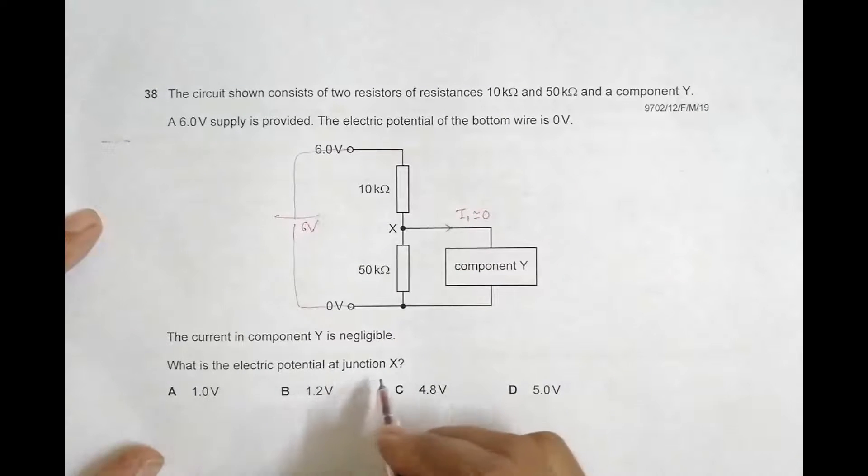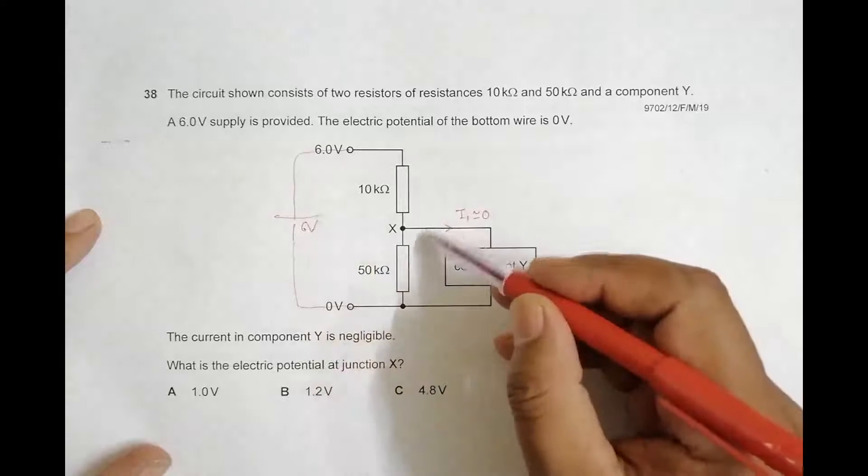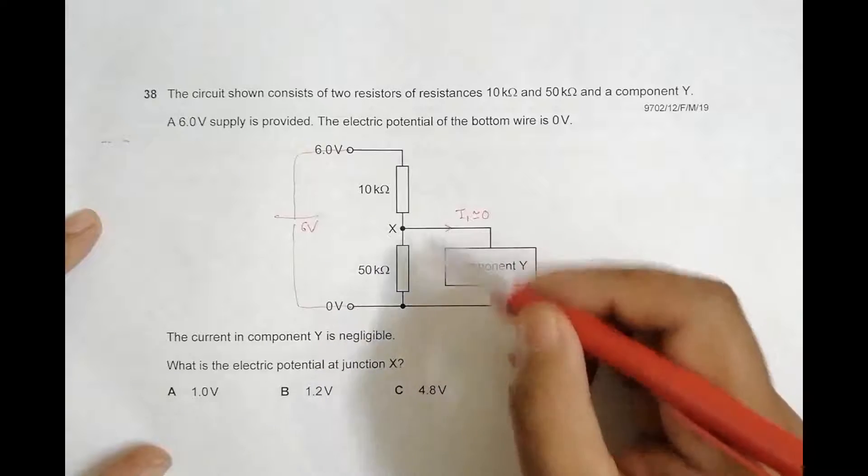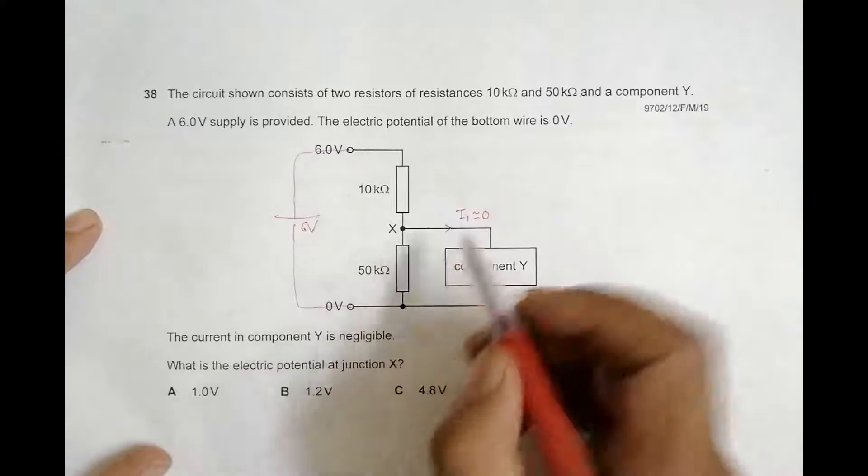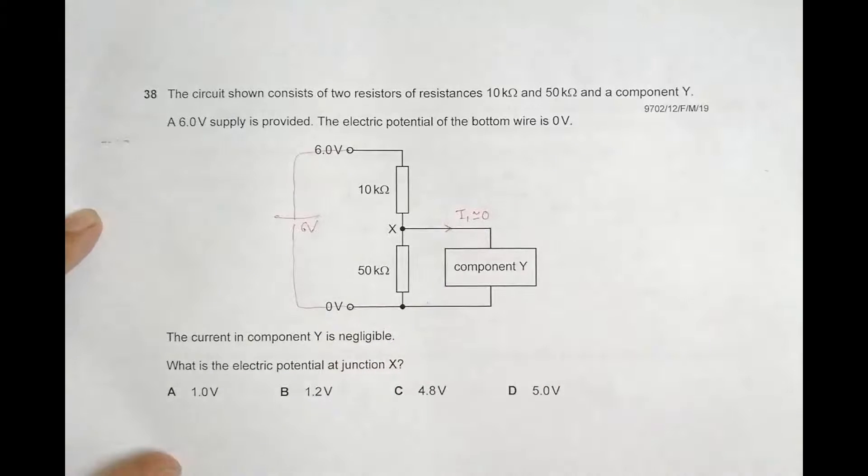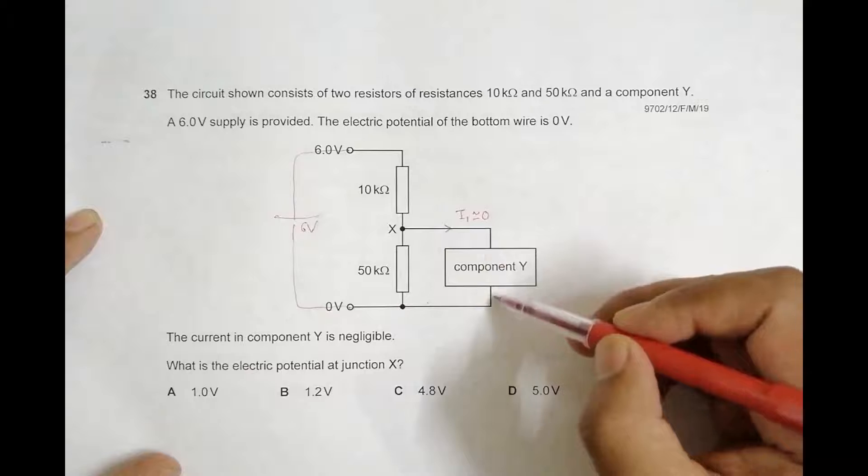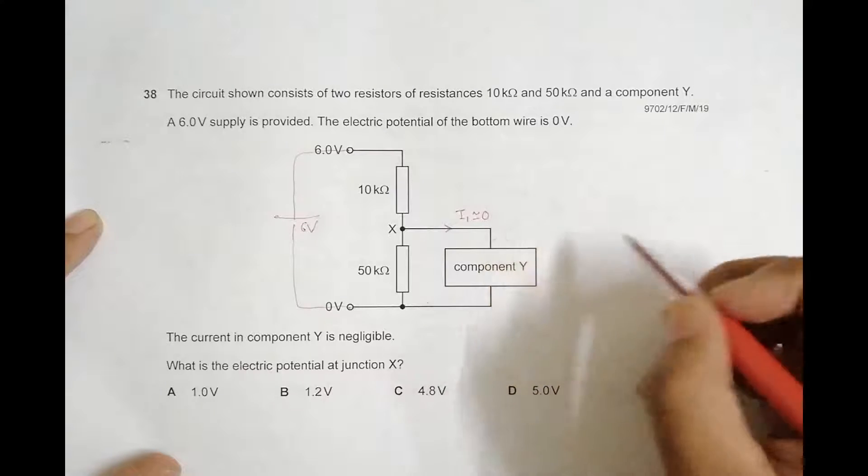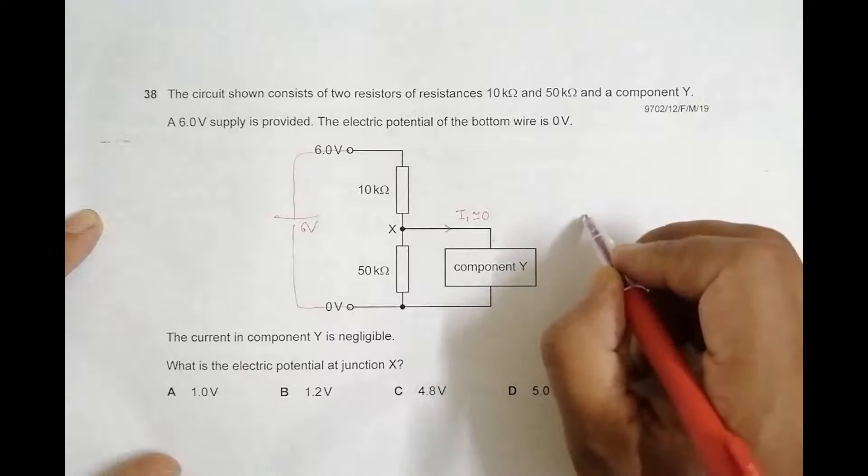We have to find this potential difference here. If this I1 is equal to 0, what it means is that there is a break here - there is an open circuit. So this resembles somewhat like this.